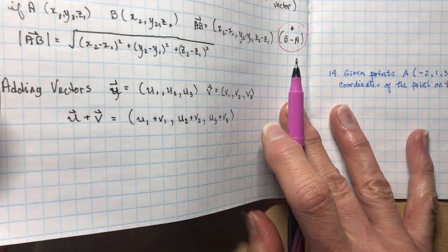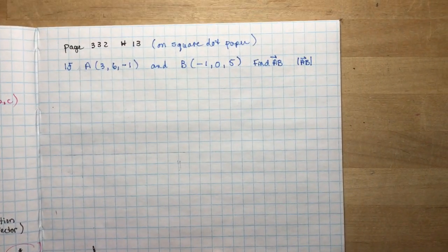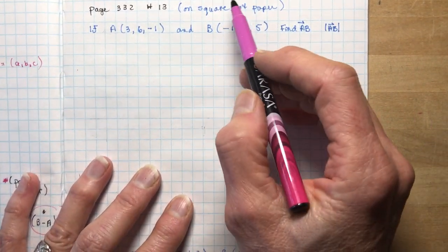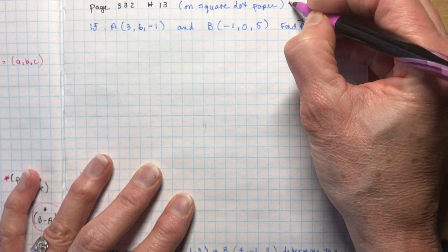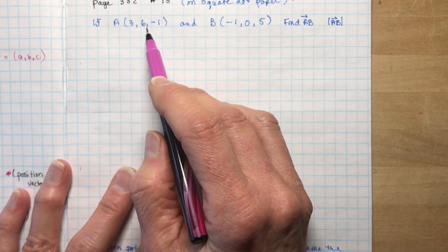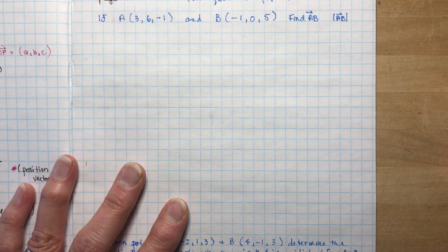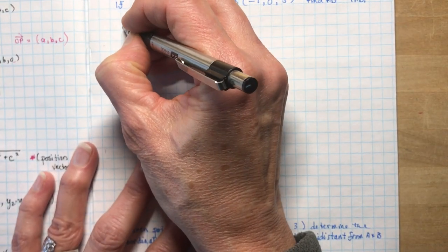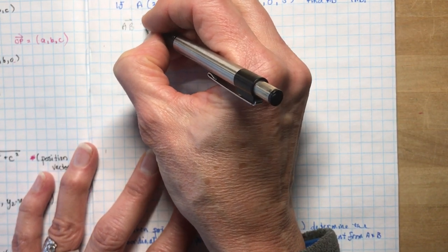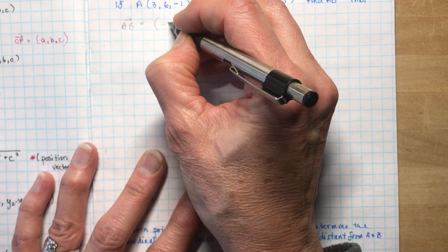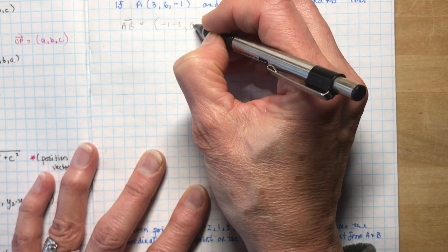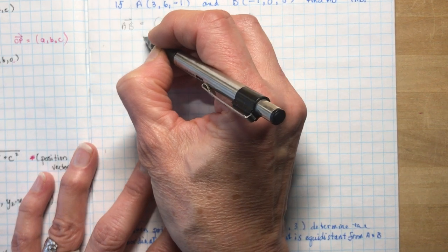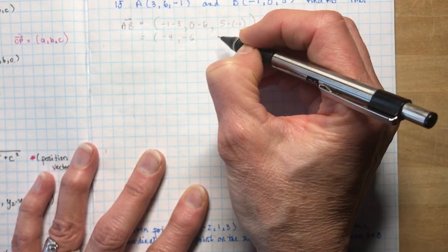Now let's get on to something that has a little bit of calculation to it. We're going to look here at a question from page 332, number 13. Let's do this calculation here: if A is (3, 6, -1) and B is (-1, 0, 5), find vector AB. So you know that vector AB is going to be B minus A. So I do B minus A: minus 1 minus 3 is my x-coordinate, 0 minus 6 is my y-coordinate, and 5 minus (-1) — be careful with those minuses. And you get (-4, -6, 6).